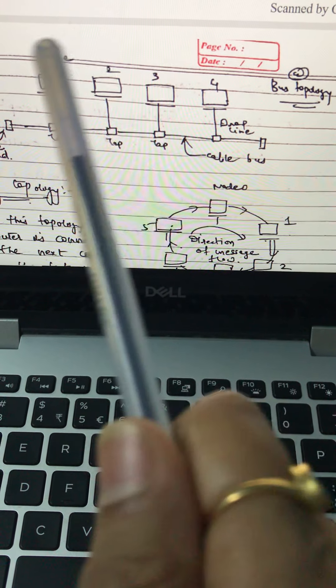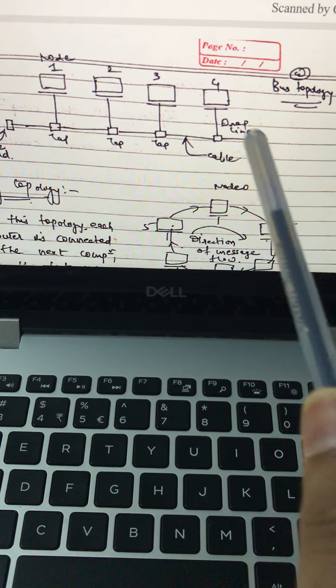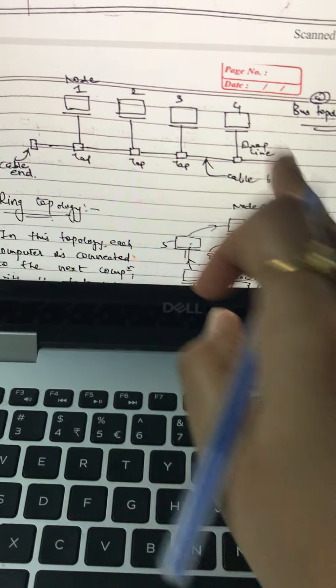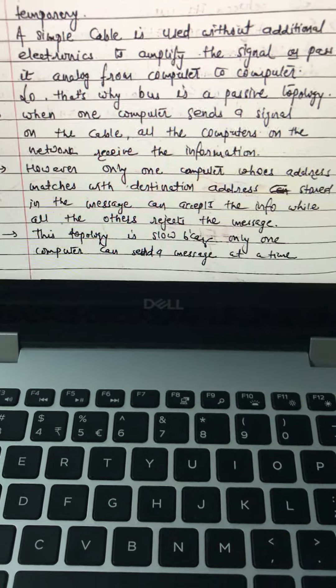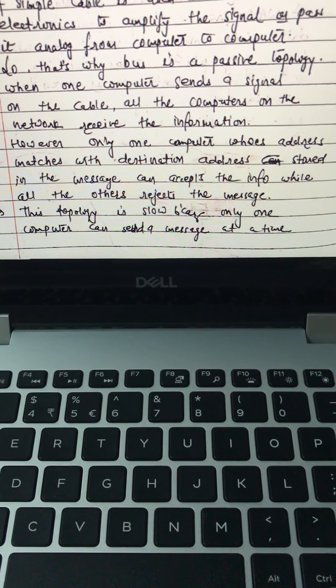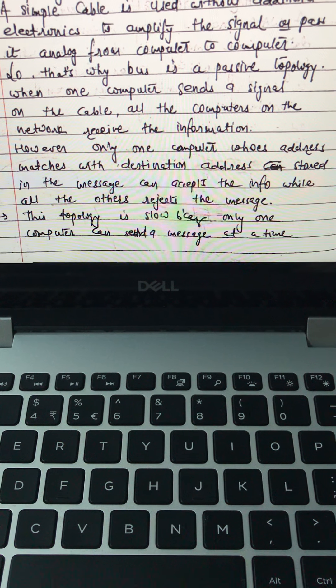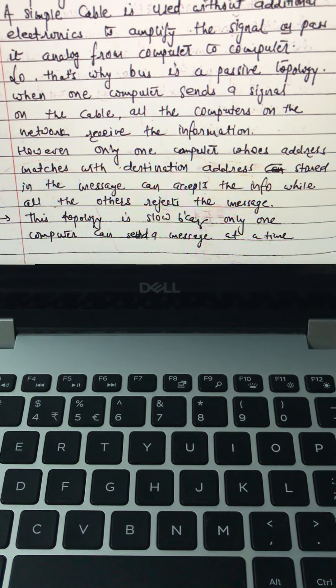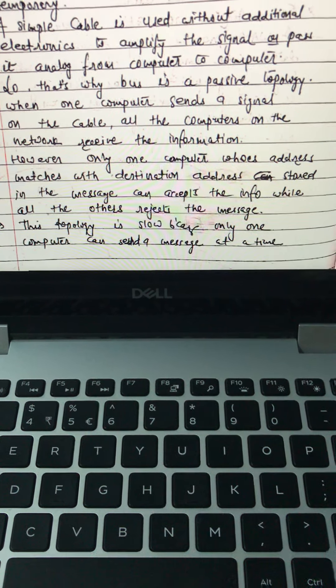So it is known as bus topology. This node 1, 2, 3, 4 are computers and the connections are drop line. Now a simple cable is used without additional electronics to amplify a signal or pass it analog from computer to computer. So that's why bus is a passive topology. It's not active. It doesn't require any kind of component.